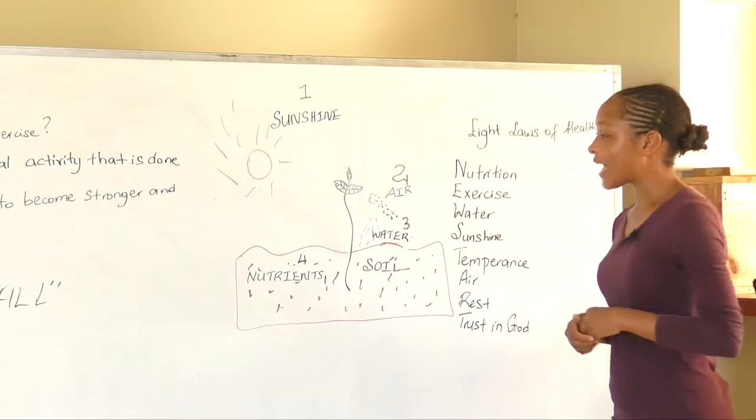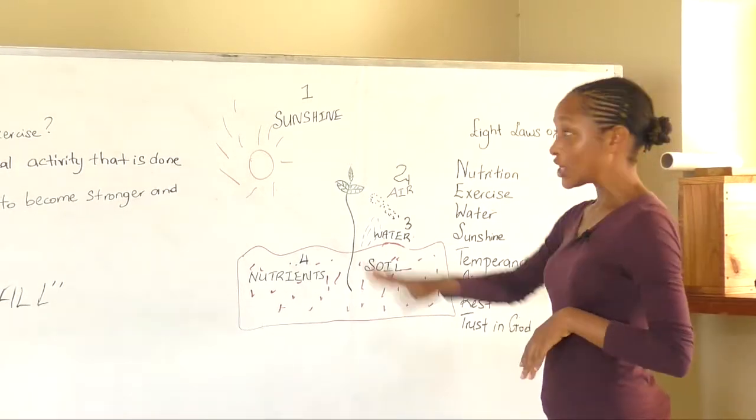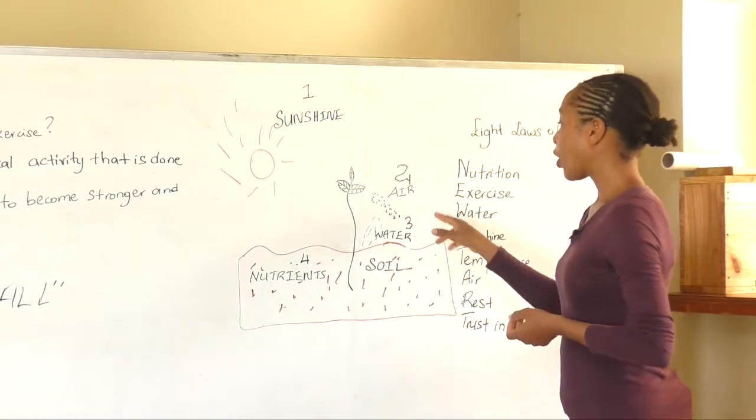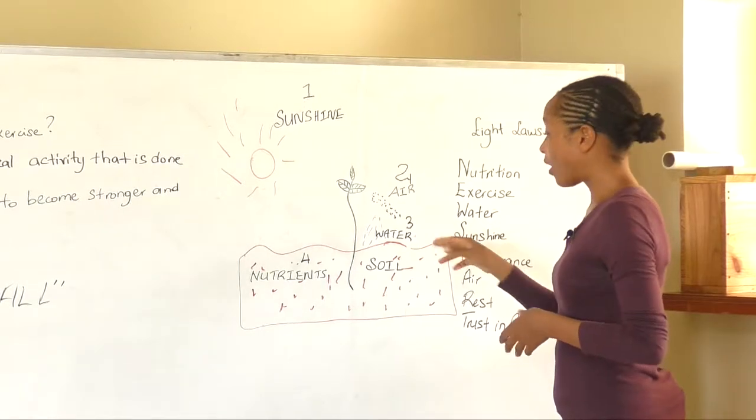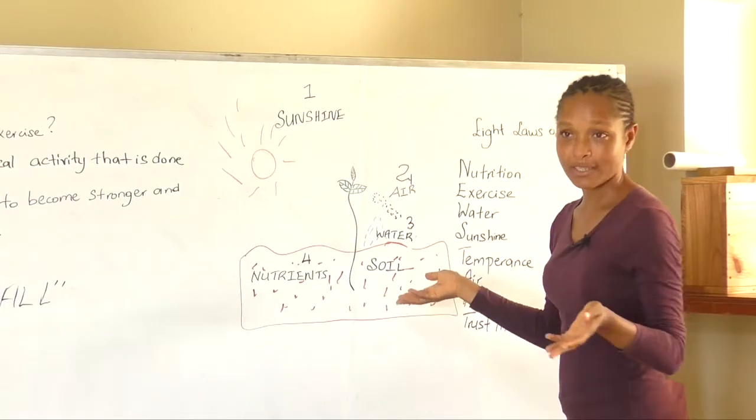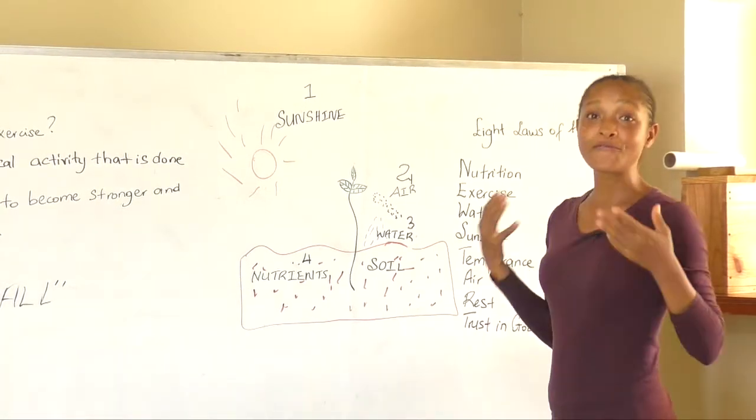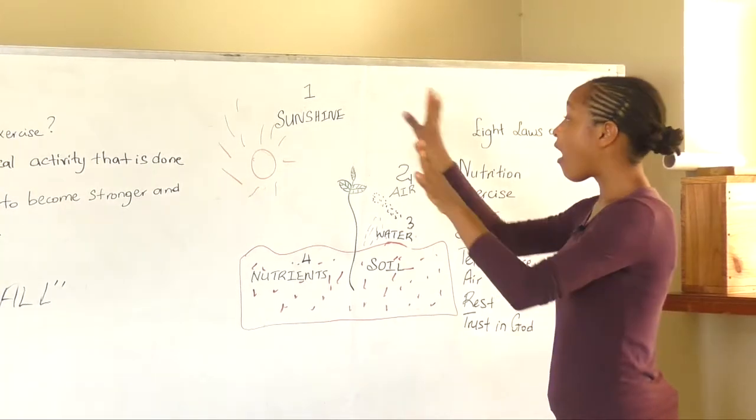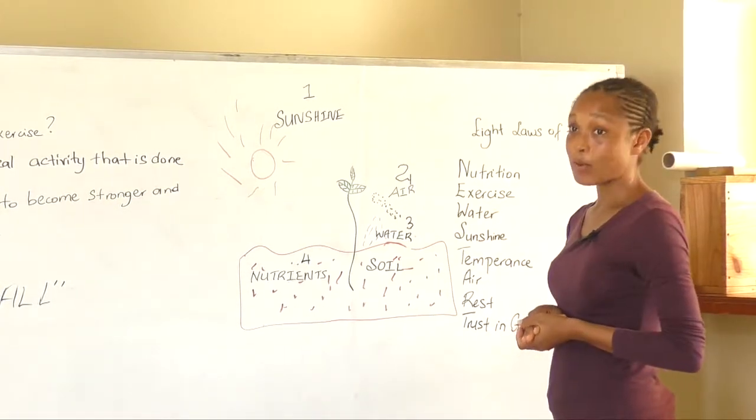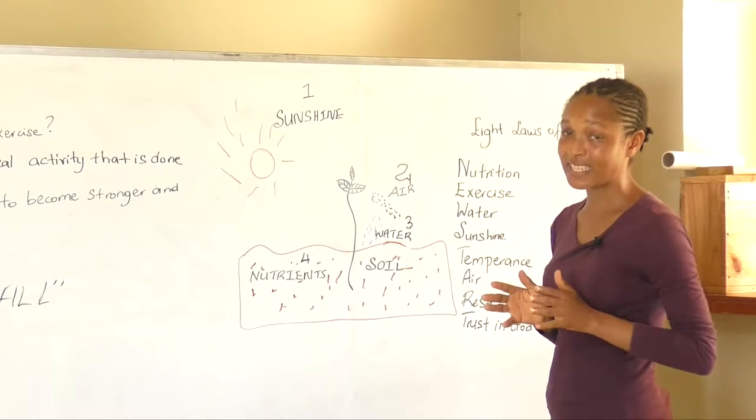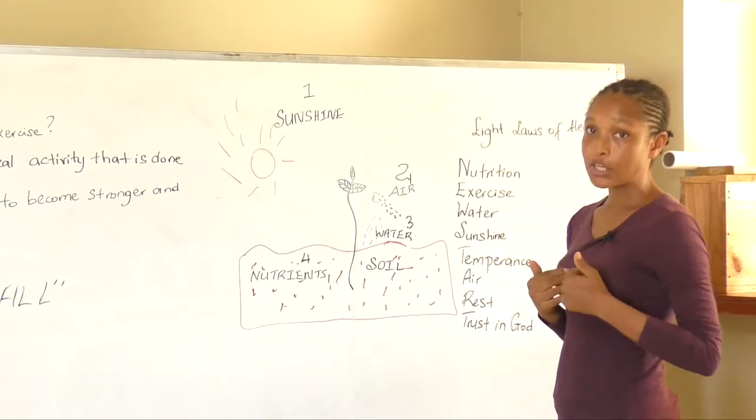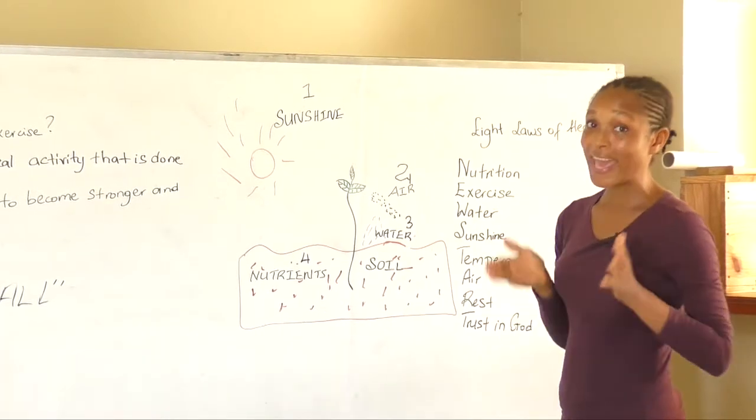This plant I have on the board, it needs sunshine, air, water, and nutrients. So in order for us to get food to eat, the plant has all of these things. And those plants have to be healthy in order for us to eat them and become healthy.